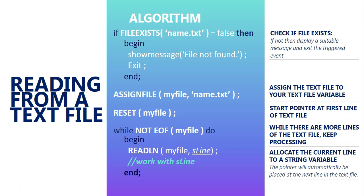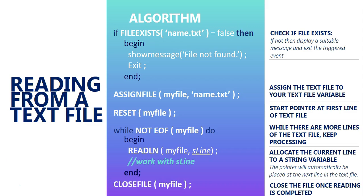That was step six — ReadLn. Step seven: when you are finished doing everything you need to do with the text file, you need to close your association with it. You need to close all connections using CloseFile with the TextFile variable. This closes the file once the reading is complete — only do this once you're finished doing everything you want. That is the recipe: the seven steps to dealing with a text file.